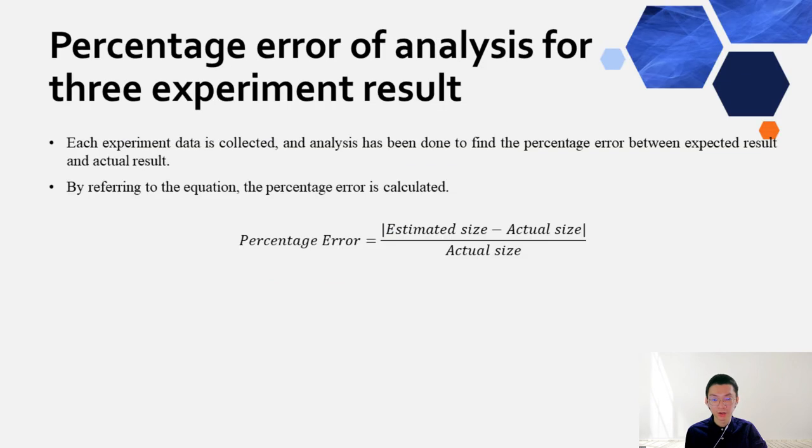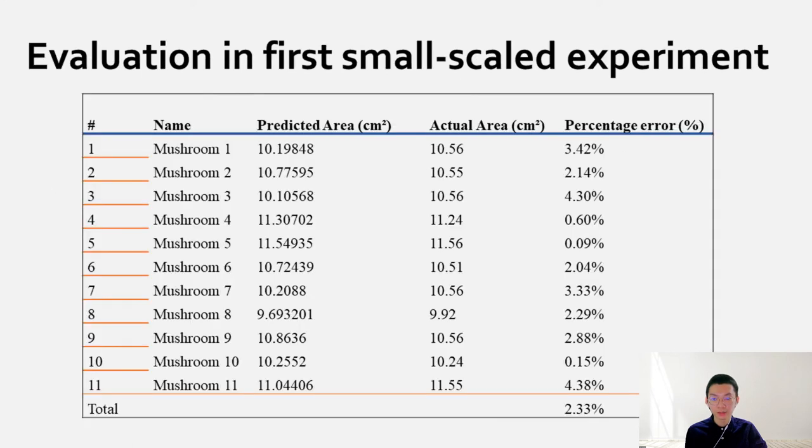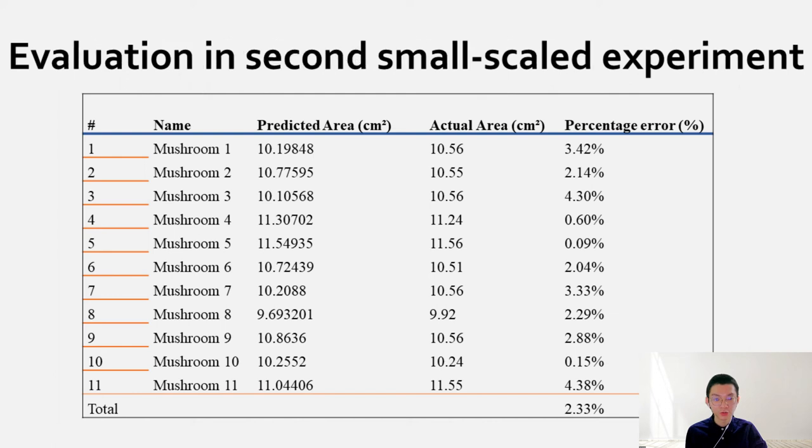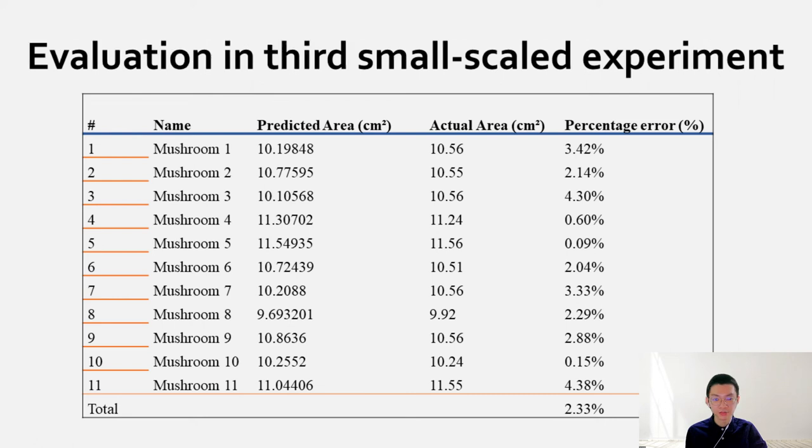The following images and tables are for experiments 2 and 3. To evaluate the performance of the hardware system, these three experiments with different small-scale button mushroom fields are tested. Each experiment data is collected, and analysis has been done to find the percentage error between expected result and actual result. This is the evaluation table for the first, second, and lastly third small-scale experiments.